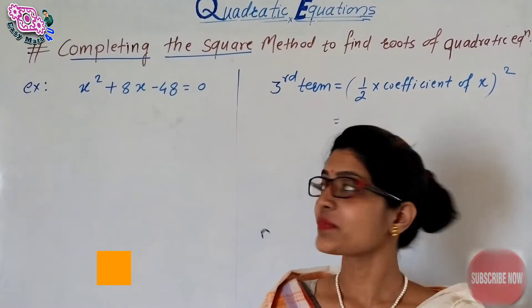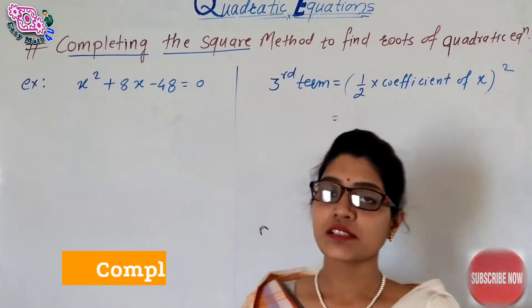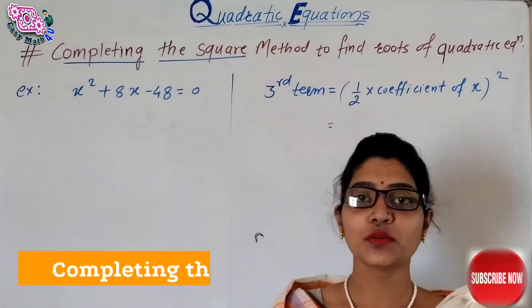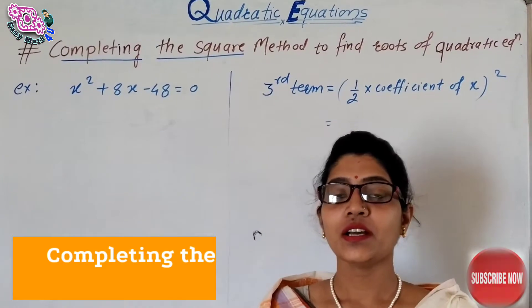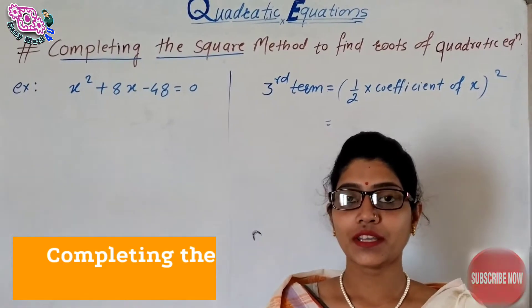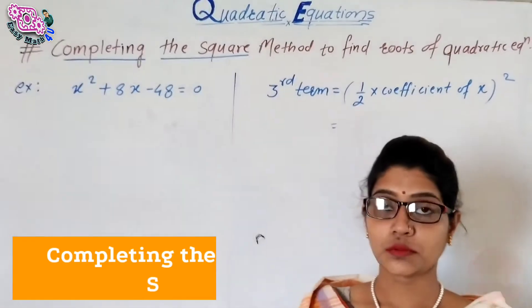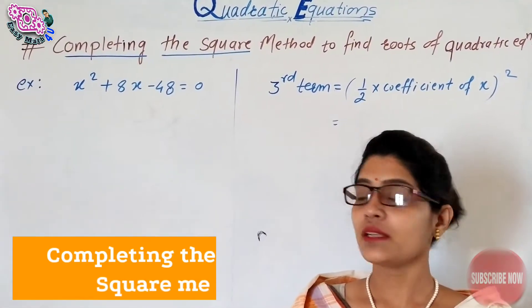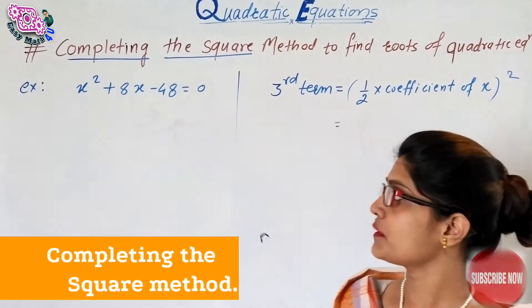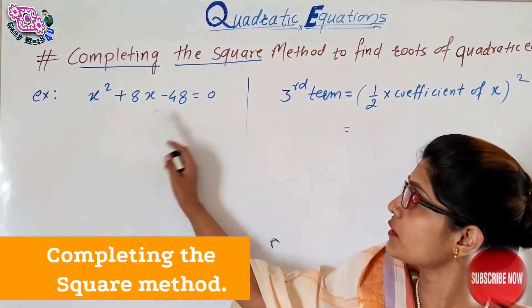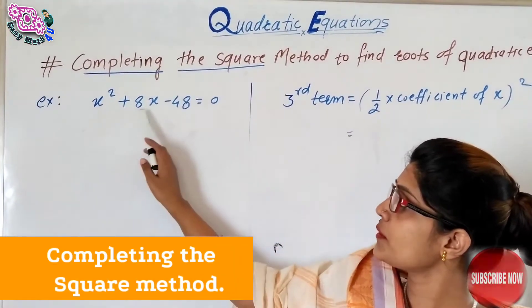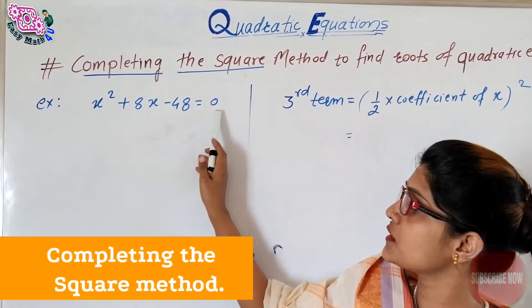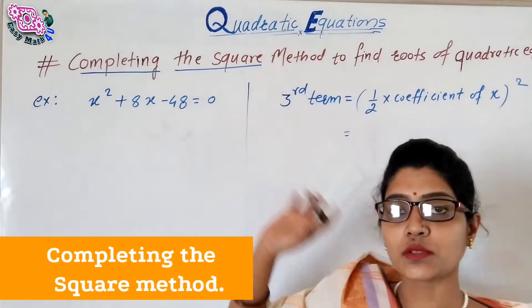The next method is the completing the square method to find the roots of quadratic equations. Our first example for the completing square method is: x squared plus 8x minus 48 is equal to 0.